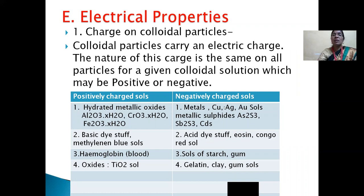Metals such as copper, silver, and gold sols, and metallic sulfides such as arsenic sulfide, Sb₂S₃, and cadmium sulfide are examples of negatively charged sols. Basic dyes: methylene blue sols are positively charged sols. Acid dyes such as eosin and Congo red solution are examples of negatively charged sols. Hemoglobin is an example of a positively charged sol. Sols of starch and gum are examples of negatively charged sols.